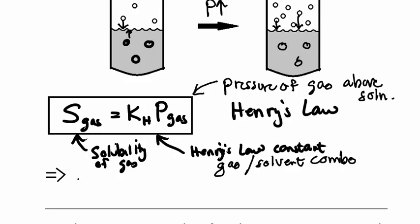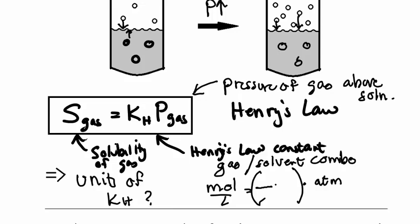What are the units of KH, the Henry's Law constant? When you have a Henry's Law equation, the solubility is usually given by moles per liter, and the pressure is generally given in atmospheres. So in order to have all the units cancel, your Henry's Law constant has to have moles per liter, and it has to have atmospheres on the bottom. So it will be moles per liter atmosphere.